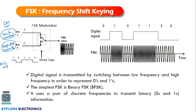When the binary data is 1, the modulated signal uses the high-frequency signal at the output. When the input is 0, the modulator chooses the low-frequency signal from oscillator one. So 0 in the message signal maps to low frequency and 1 maps to high frequency. After modulation, the sequence 0-0-1-1-0-0 looks like this: at 0 the frequency is less, at 1 the frequency is more. This is frequency shift keying.